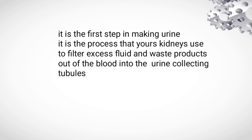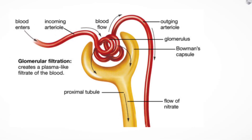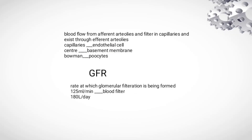Glomerular capillaries are the first step in urine making. This process filters excess fluid and waste products from the blood. Blood first enters through the afferent arteriole, is filtered, and the filtrate passes to the proximal tubule. Blood then flows out through the efferent arteriole and into the peritubular capillaries.